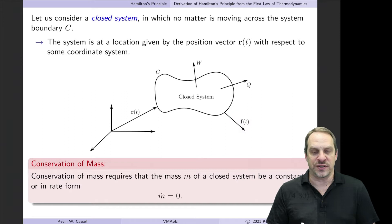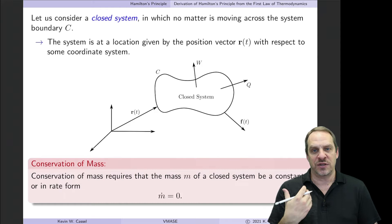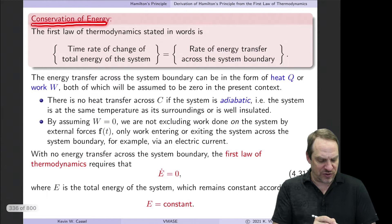First, conservation of mass requires that the mass M of the closed system remains constant. If there's no mass going in or out, then the mass of the system has to remain constant. So Ṁ equals zero — the time rate of change of mass, dM/dt, is equal to zero.